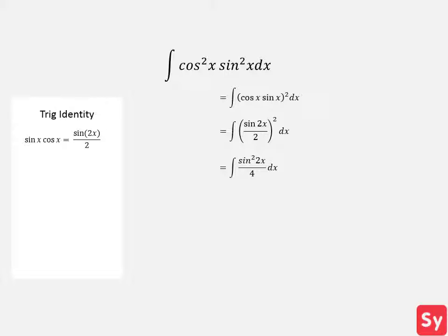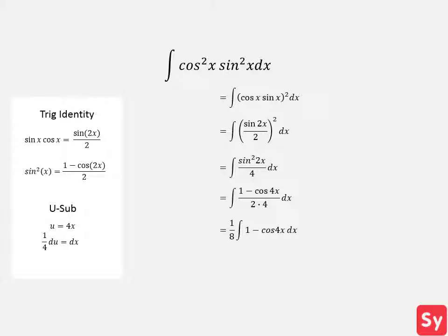We simplify and can see that we can use another trig identity: sine of x squared equals 1 minus cosine of 2x over 2. We substitute that in for sine of 2x squared — don't forget it's sine of 2x, not sine of x — giving us 1 minus cosine of 4x over 4 times 2. We pull out the constant one-eighth using the constant multiplication rule, then use u substitution with u equal to 4x and one-fourth du equal to dx. After applying the sum rule, we get one-eighth times x minus 1 over 32 times sine of 4x plus C.